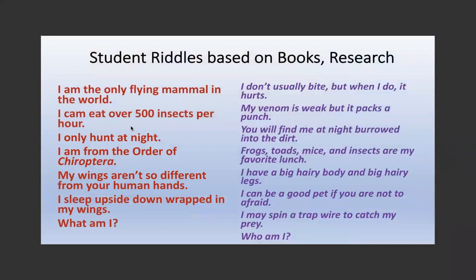Student riddles are another example. One on the left: 'I am the only flying mammal in the world. I can eat over 500 insects per hour. I only hunt at night. I am from the order Chiroptera. My wings aren't so different from human hands. I sleep upside down, wrapped in my wings. What am I?' They're talking about a bat. Go back and have kids fact-check all of this - double-check to be as scientifically accurate as they can. Another one is likely a tarantula on the right.